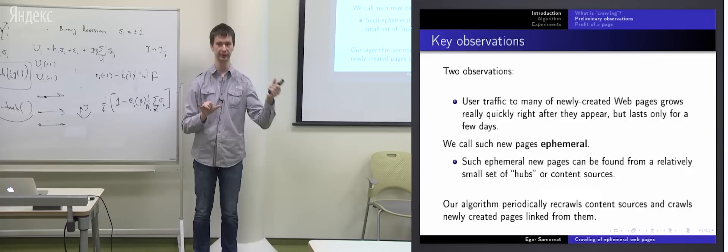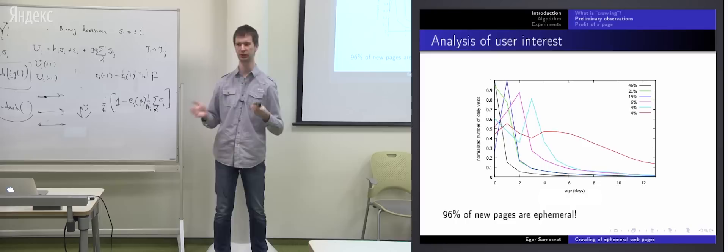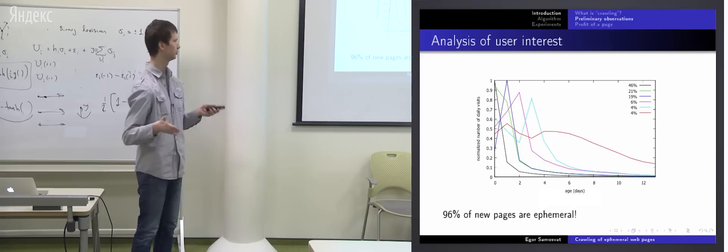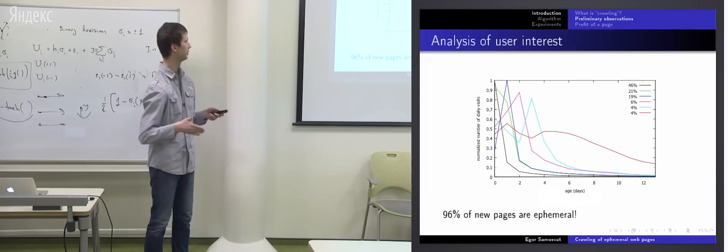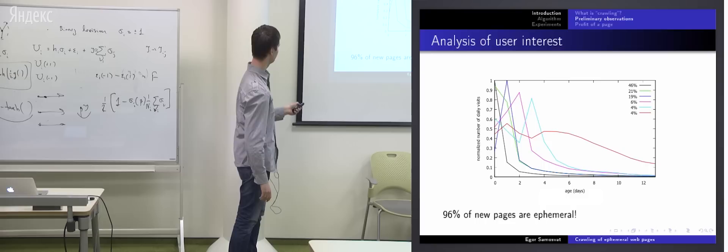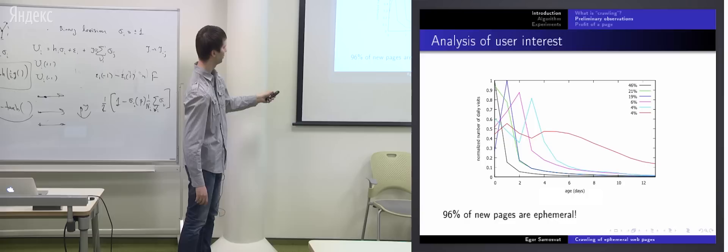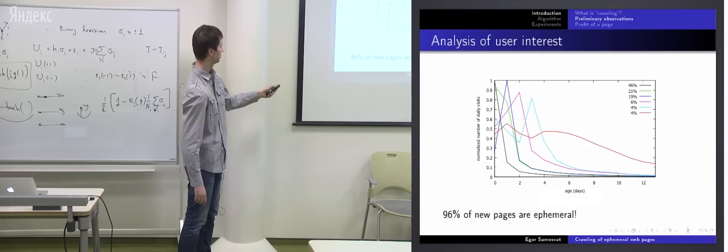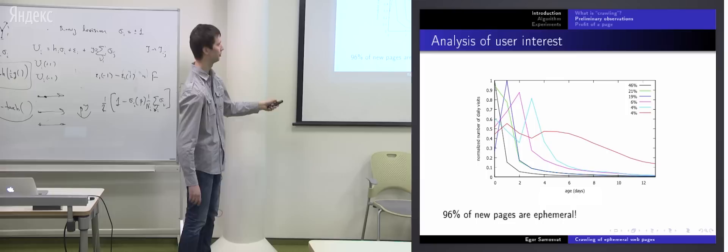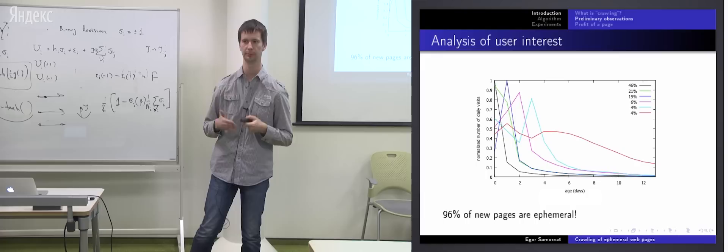Okay, so about our experimental observations. We analyzed logs of Yandex browser and Yandex toolbar. And here you can see typical user, typical patterns of user interest to newly created pages. You can see that the most of pages, like 96 percent, are ephemeral. If you look, for example, on black curve, you'll see that this page was interesting for users like three days. This one about a week, and only four percent of pages have a long term user interest. Okay, so the most of pages are ephemeral and the problem we are trying to solve is important.